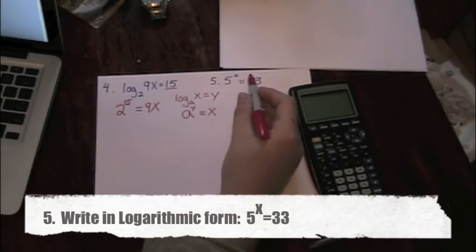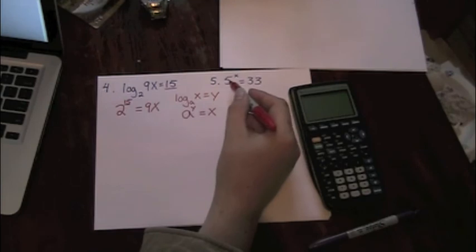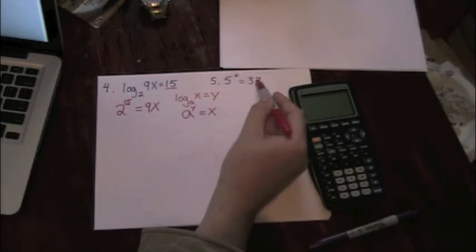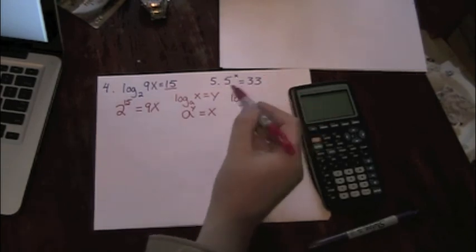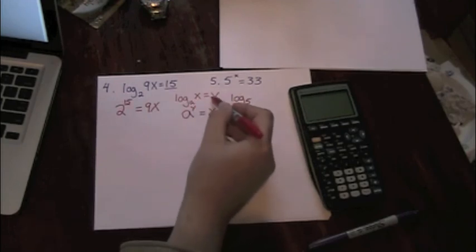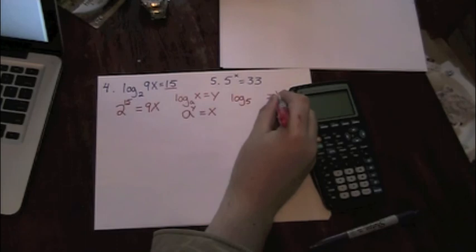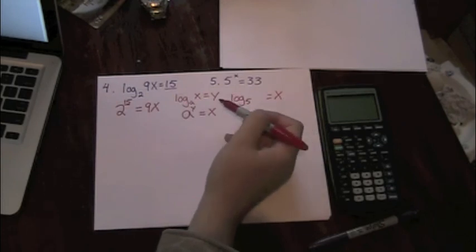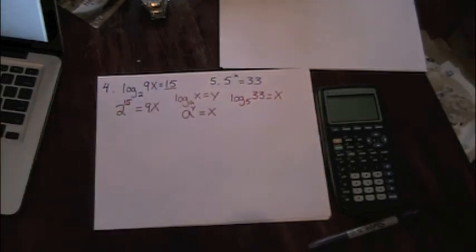The second one is asking us to convert from exponential to logarithmic form. So if I go backwards and follow this kind of format here, I have a to the y equals x, 5 to the x equals 33. My 5 is going to become the base of my logarithm. So log base 5, my right side of the equation is going to come from the exponent, in this case x. And the inside of the log function is going to come from the right side of the equation. So 33 is going to fill in there.